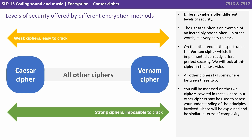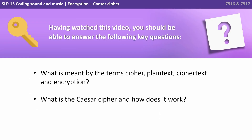You will be assessed on the two ciphers covered in these videos, but other ciphers may be used to assess your understanding of the principles involved, and these will be explained and will be similar in terms of complexity. Having watched this video, you should be able to answer the following key questions: What is meant by the terms cipher, plain text, cipher text, and encryption? And what is the Caesar cipher and how does it work?